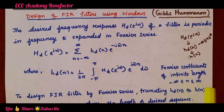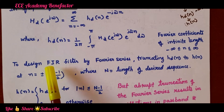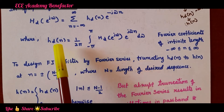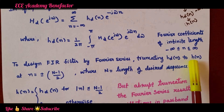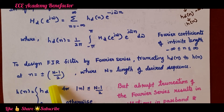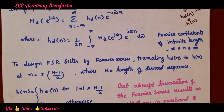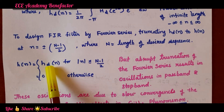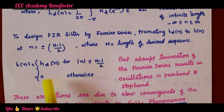n is ranging between minus infinity to infinity. To design an FIR filter — that is, finite impulse response filter — by the Fourier series method, we have to truncate this H_d(n). Truncating H_d(n) to H(n) at n = ±(N−1)/2, where capital N is the length of the desired sequence. So H(n) = H_d(n) for |n| ≤ (N−1)/2, and 0 otherwise.